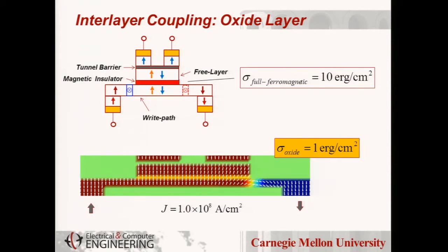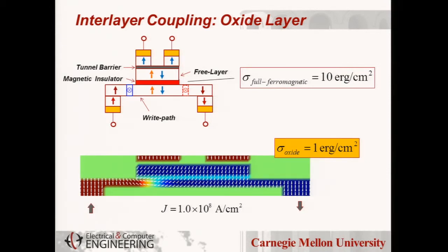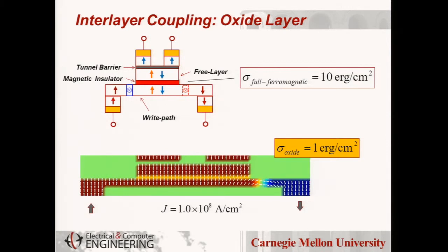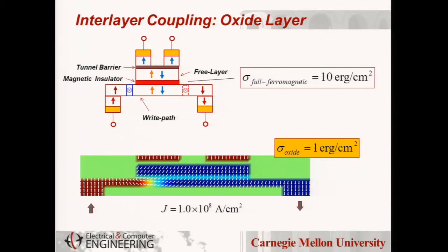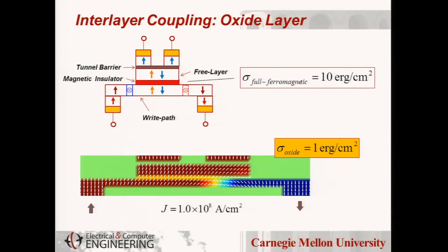You can actually reduce this switching current a bit. This magnetic insulating layer, if you actually reduce this coupling energy, not have fully very high strong exchange coupled, you can actually reduce this switching current a little bit and still robust.